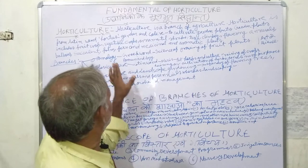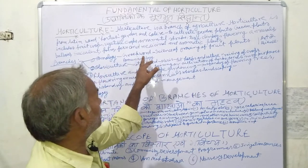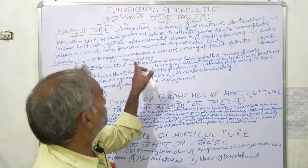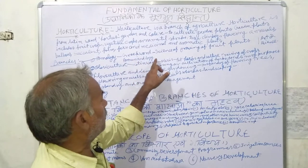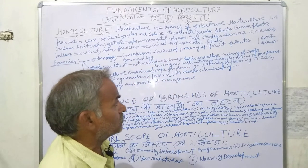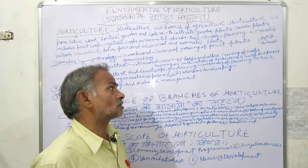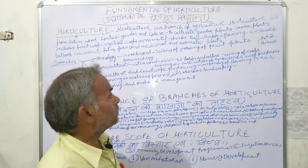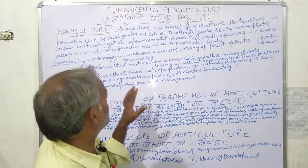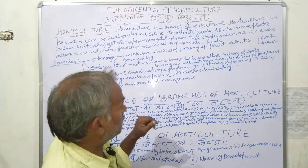Pomology is derived from the Greek word 'Pomom' meaning fruit and 'Logi' meaning science — the science of growing fruit plants. We study the cultivation of fruit plants, and this science is known as the Pomology branch.